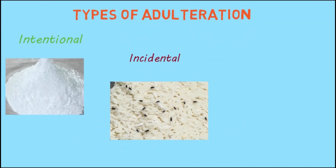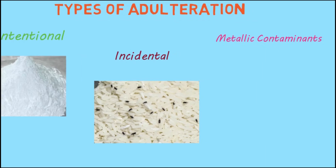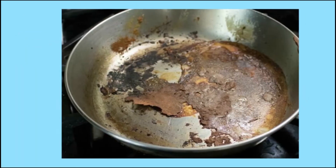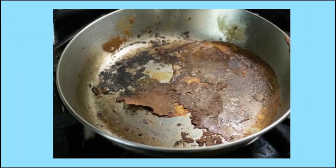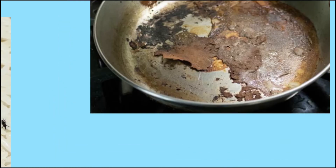Metallic adulteration: metallic impurity is added, either intentionally or accidentally. For example, it can come from cooking vessels.